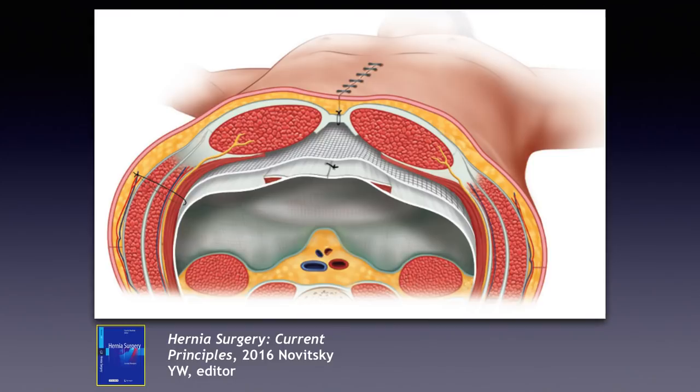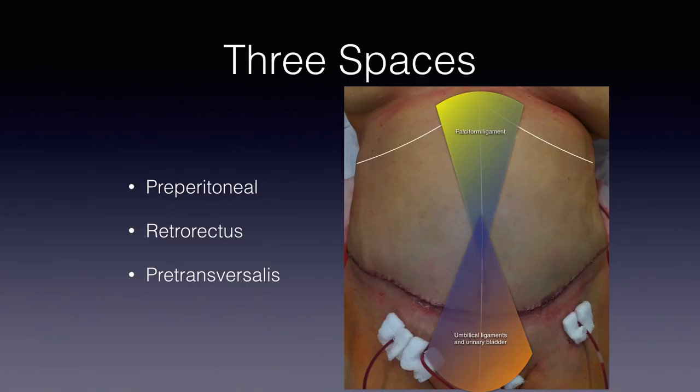TAR also allows you to use a relatively inexpensive piece of mesh. In our practice, we mostly use a medium-weight macroporous mesh, which costs just over $100, comes in a large size, and performs quite well in these spaces. When talking about the dissection itself, it can be quite confusing — one way to think about it is that in transversus abdominis release, we are essentially connecting three spaces together.